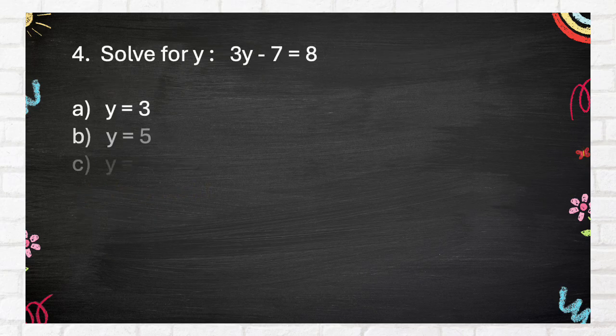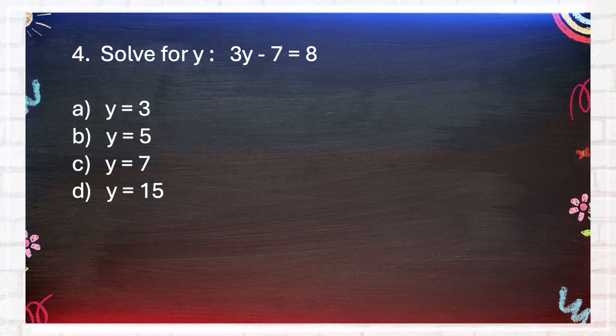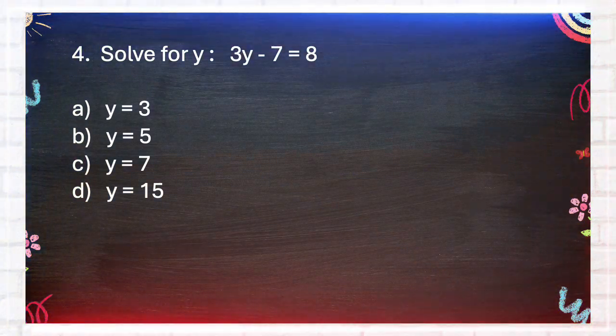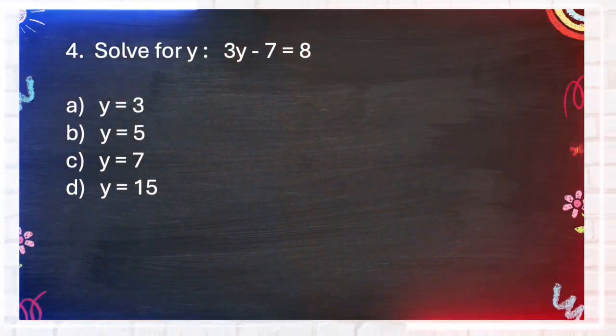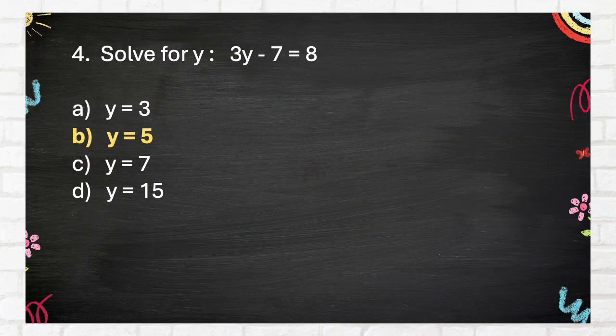Number 4. Solve for Y: 3Y minus 7 equals 8. A. Y equals 3. B. Y equals 5. C. Y equals 7. D. Y equals 15. The correct answer is B, Y equals 5.